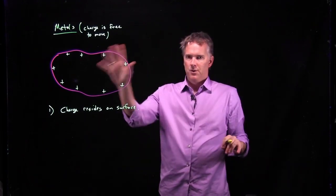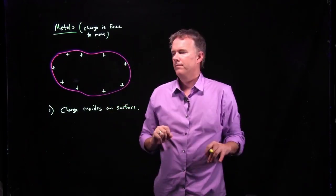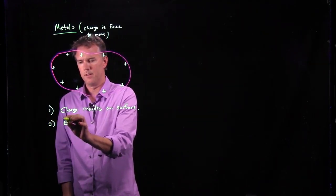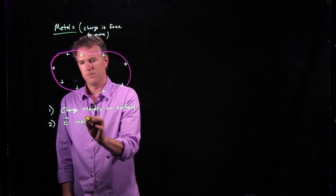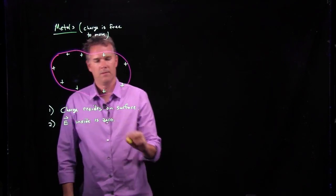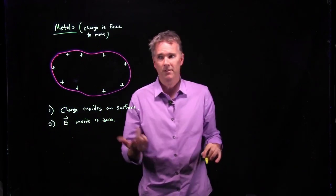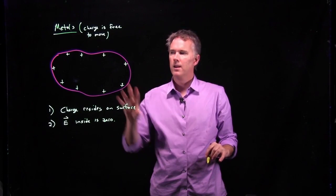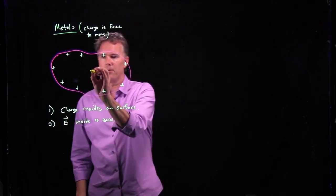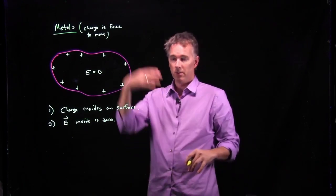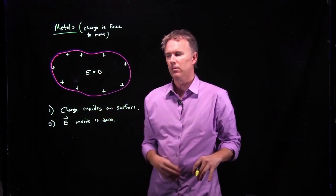If all the charge is on the surface, then the E field inside is zero. Why is it zero? Because if it wasn't zero then charge would still be moving. The E field in here has to identically be zero everywhere inside the conductor. This is of course in the static equilibrium case.